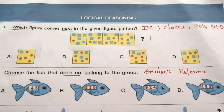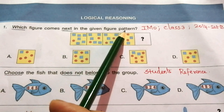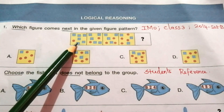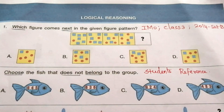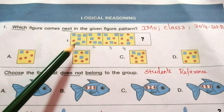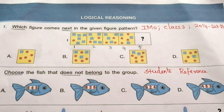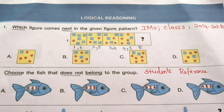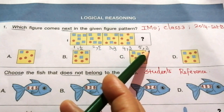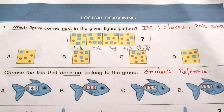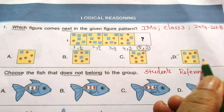The first topic is Logical Reasoning. Question 1: Which figure comes next in the given figure pattern? To find the answer, we count the number of circles and squares in each block. The circles go 1, 2, 3, 4 — so the next one should have 5 circles. The squares go 6, 5, 4, 3 — decreasing — so the next one should have 2 squares. Therefore our answer is D: five circles and two squares.